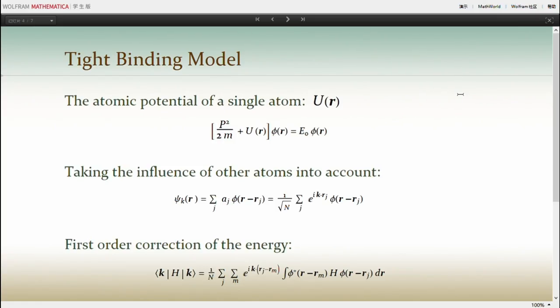Let's now talk about the tight binding model. Assuming the potential of a single atom is UR, then the Schrodinger equation can be written like this. We now consider the effect of other atoms as perturbation, as we have seen in the last slide. Each energy level of each atom split into two in a two-hydrogen atom system. The degeneracy of each energy level is two.